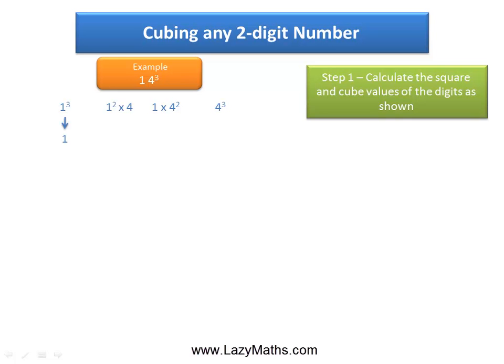The value of 1 cubed is 1. The value of 1 squared times 4 is 4. The value of 1 times 4 squared is 16, and the value of 4 cubed is 64.